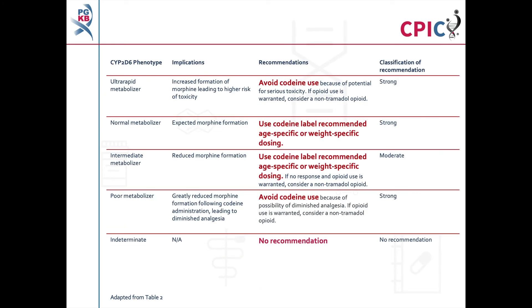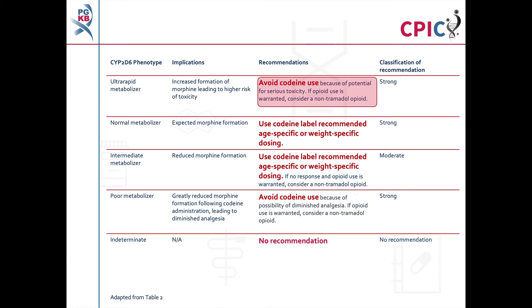These are the CPIC dosing recommendations for codeine as shown in Table 2 of the guideline. Patients with a CYP2D6 ultra-rapid metabolizer phenotype will have increased formation of morphine following administration of codeine, which increases the risk of toxicity. Codeine should be avoided in these patients. If opioid use is warranted, consider using a non-tramadol opioid. This is a strong recommendation.